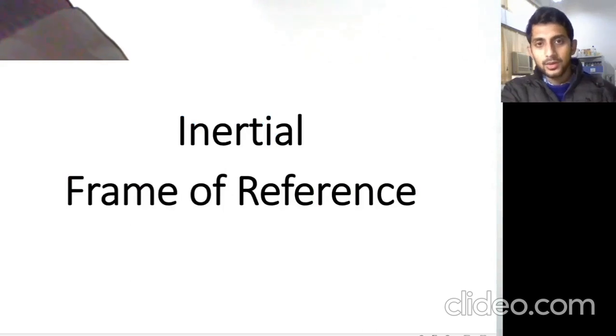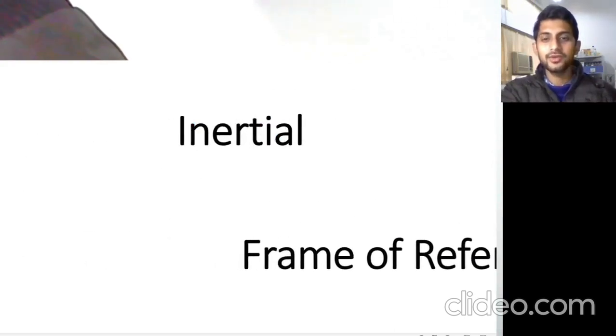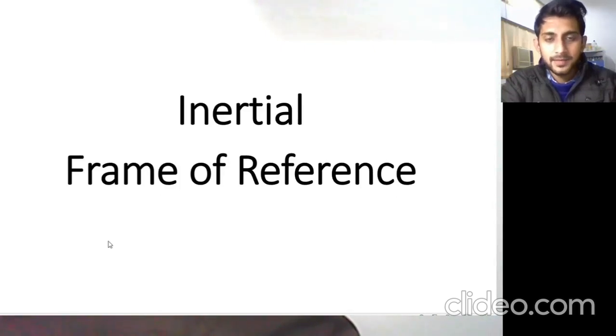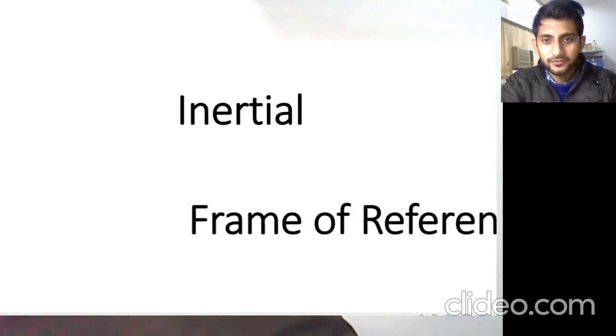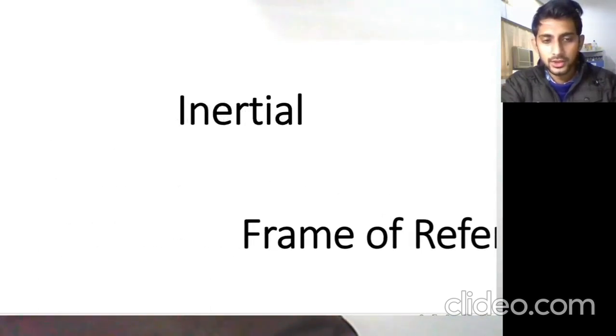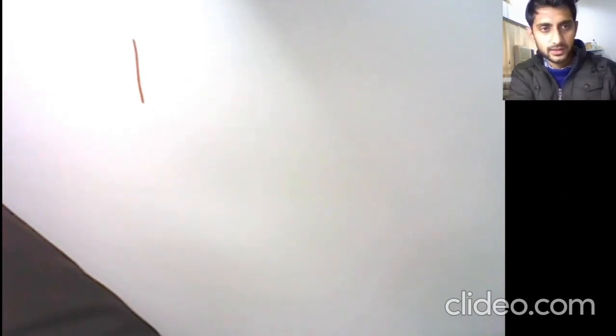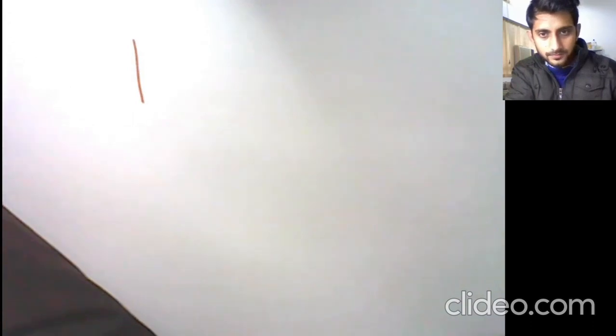For example, now we will say we will try to understand what is inertial frame of reference. But before that, we have to understand what is frame of reference. And for that, what I want is, I want you to come on pen and paper and to understand what is frame of reference and what is inertial frame of reference. So, let me just switch from presentation mode to pen and paper mode. I hope this one is visible. Or should I decrease the brightness? I should definitely. Let me just give a moment. Fine.